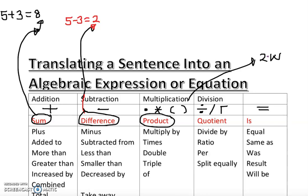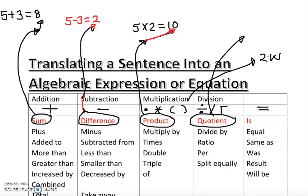The next term is product. If you multiply 5 times 2, you get 10 — we call that the product. When you multiply, the answer is called the product. Then there's quotient: 15 divided by 3 equals 5 — that answer is called the quotient. So to summarize: add → sum, subtract → difference, multiply → product, divide → quotient. And when you have an equal sign, that means 'is equal to.'